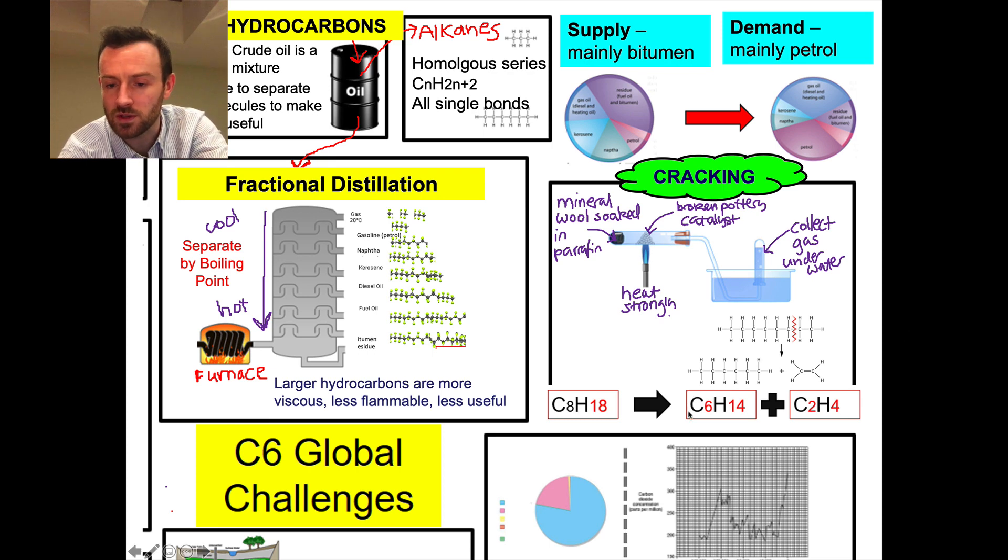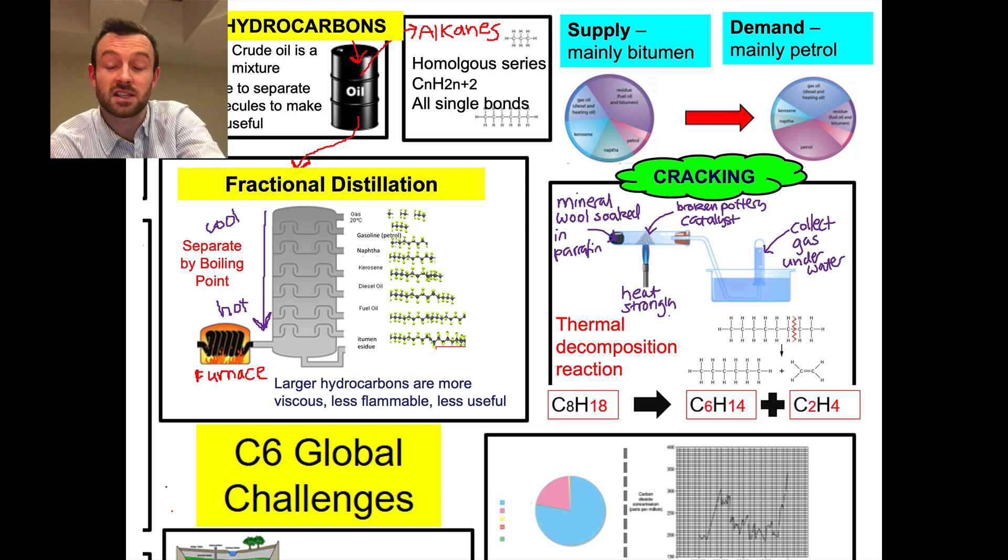So there are - the molecule on the left is C8H18, so that would be something called octane. And then on the right we produce two different molecules: C6H14, which is called hexane, and this is something different. So this is not an alkane, because remember an alkane has the formula CnH2n+2. So that's not an alkane, triple scientist - that is an alkene, and it's called ethene. So overall, the other thing we need to know about this reaction is it's an example of a thermal decomposition reaction, and a catalyst makes it happen. Okay, so that's oil.